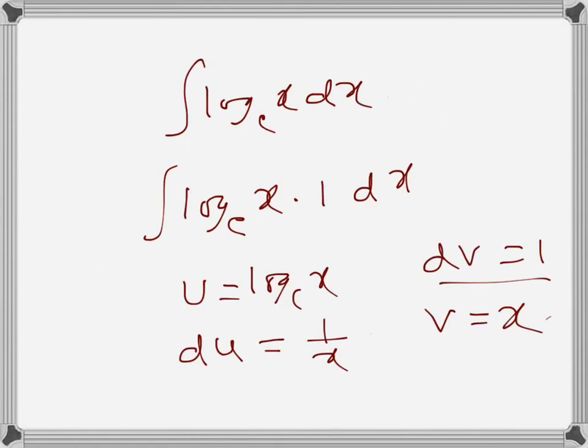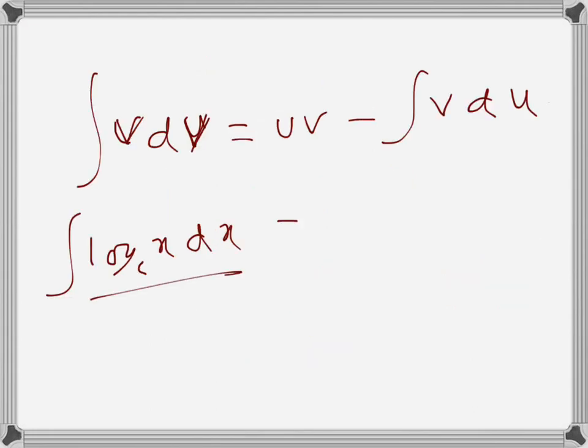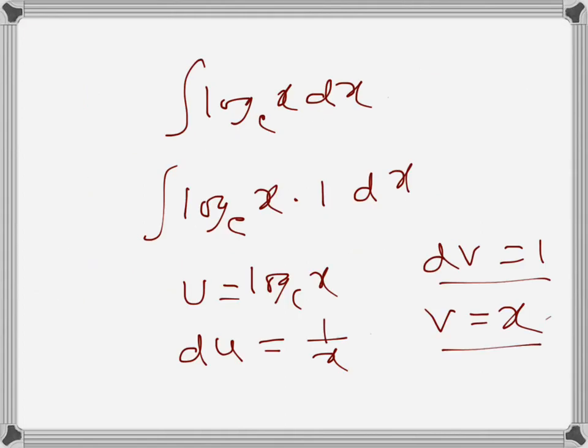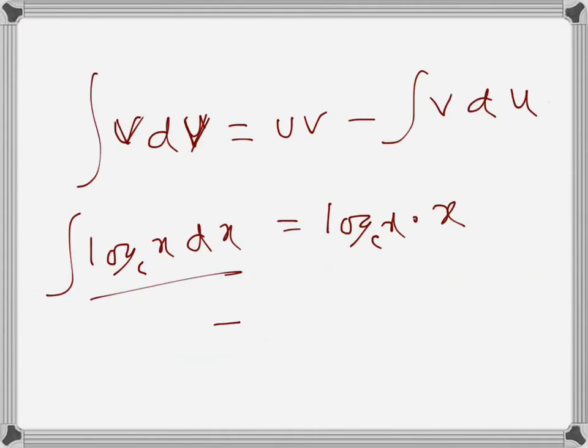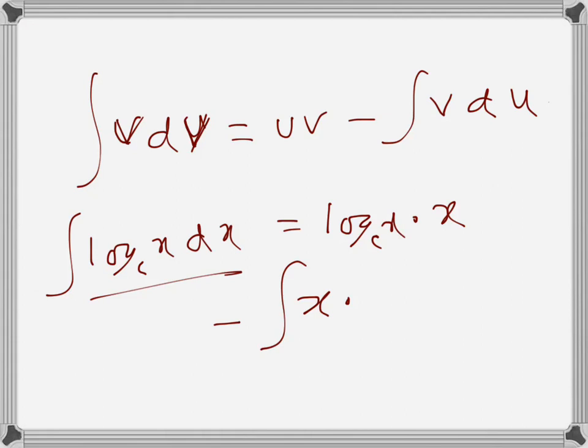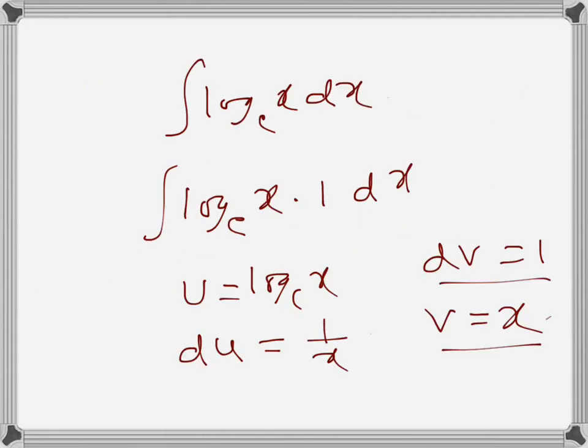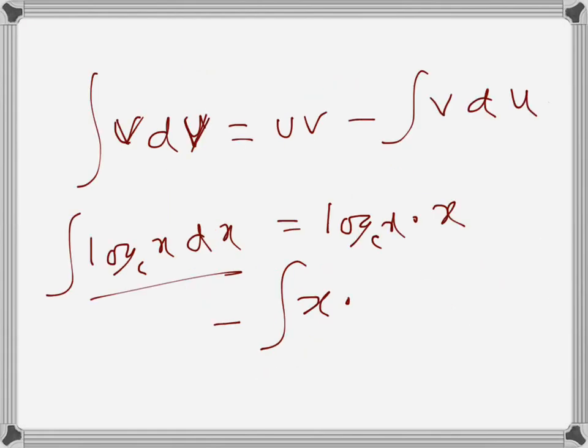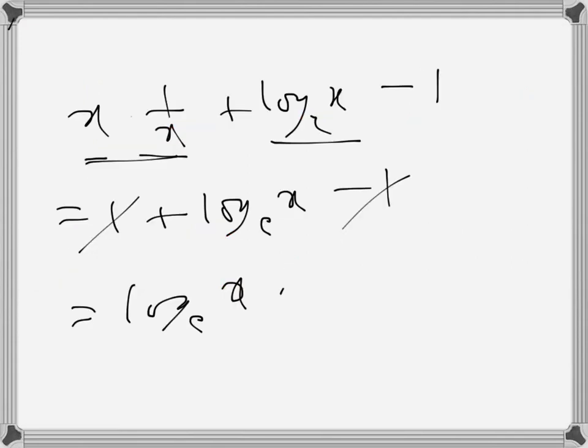Applying the formula: u is log_e x and v is x, so we get x log_e x minus the integral of v times du. Here v is x and du is 1 over x dx.